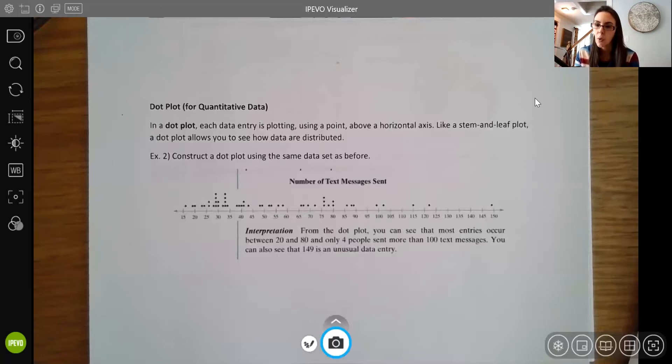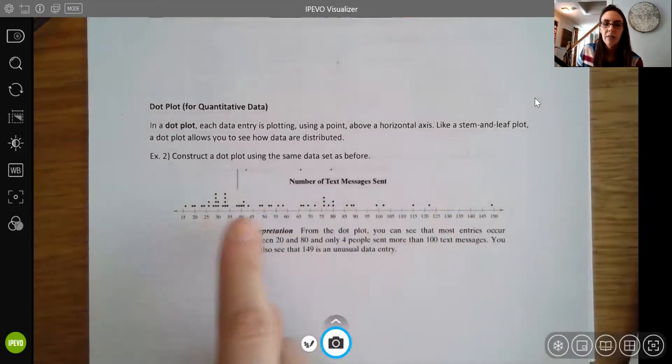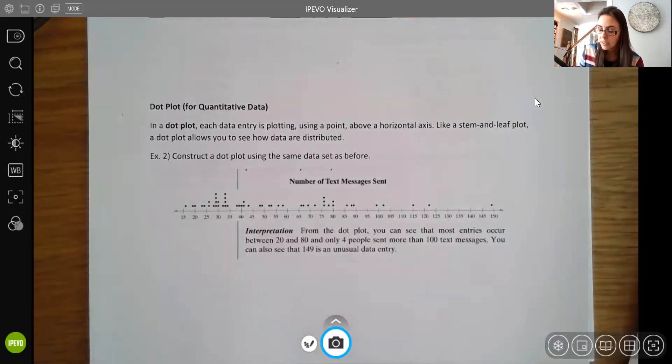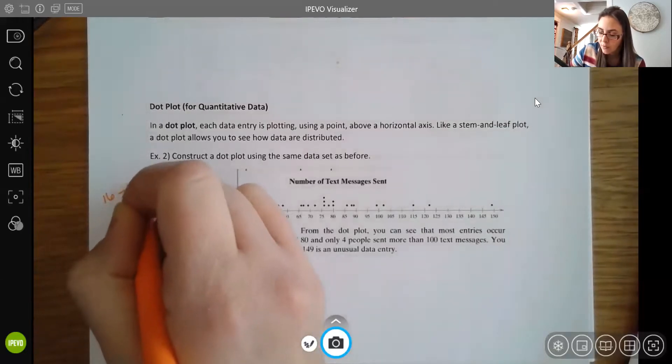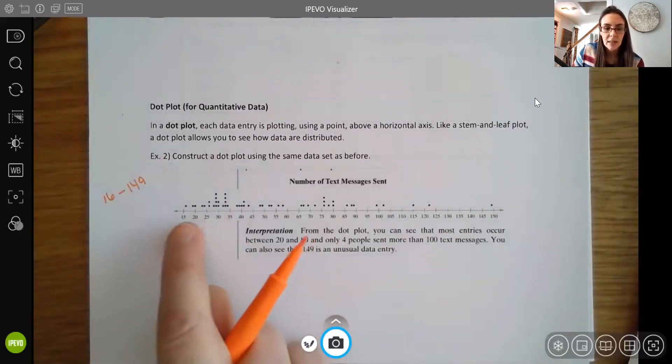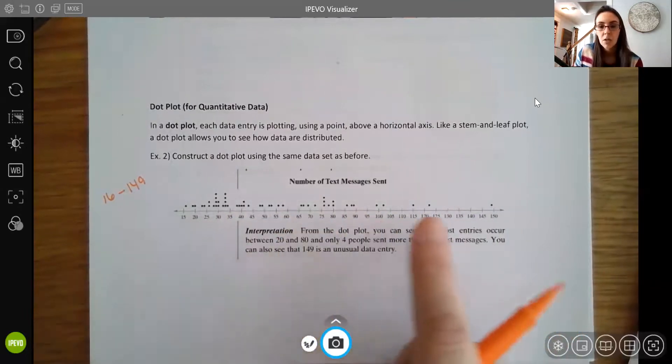So stem and leaf plots and dot plots are used for quantitative data. And what you do, it's almost like a number line, very similar. So you draw a number line relevant for your data. We're using that same data of text messages. So remember, our lowest data point was 16 and our upper data point was 149. So you'll see that this number line here is from 15 to 150.